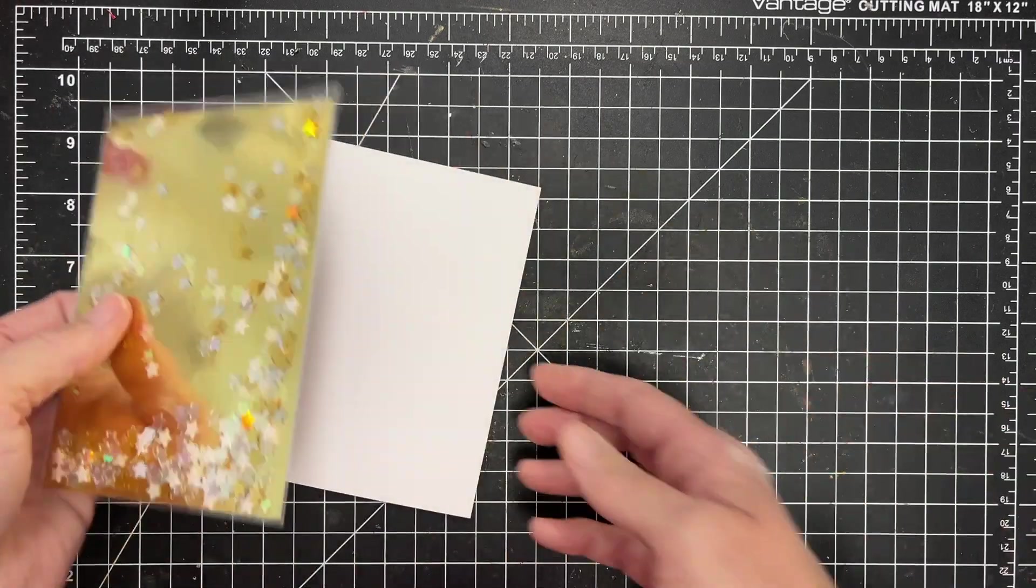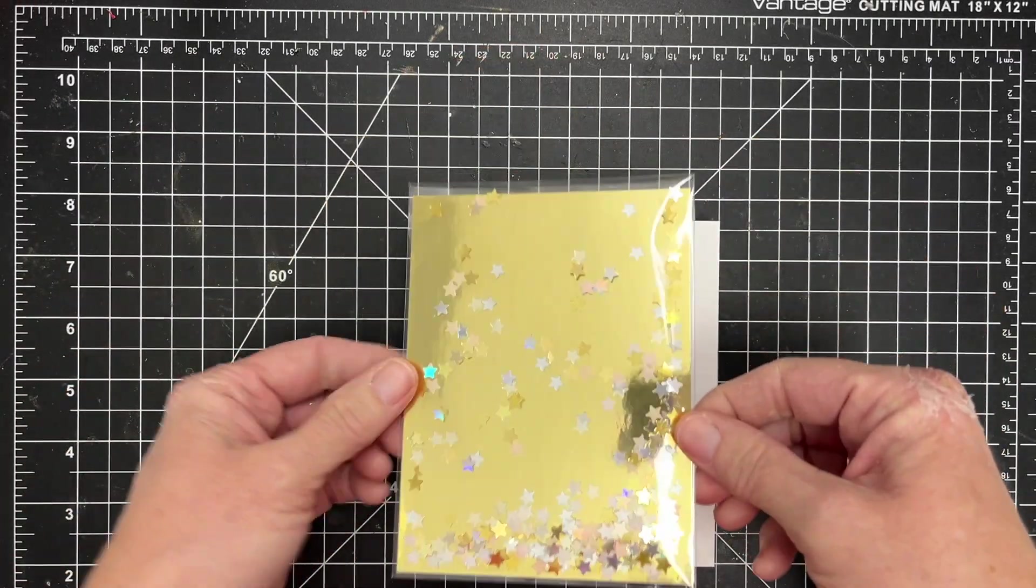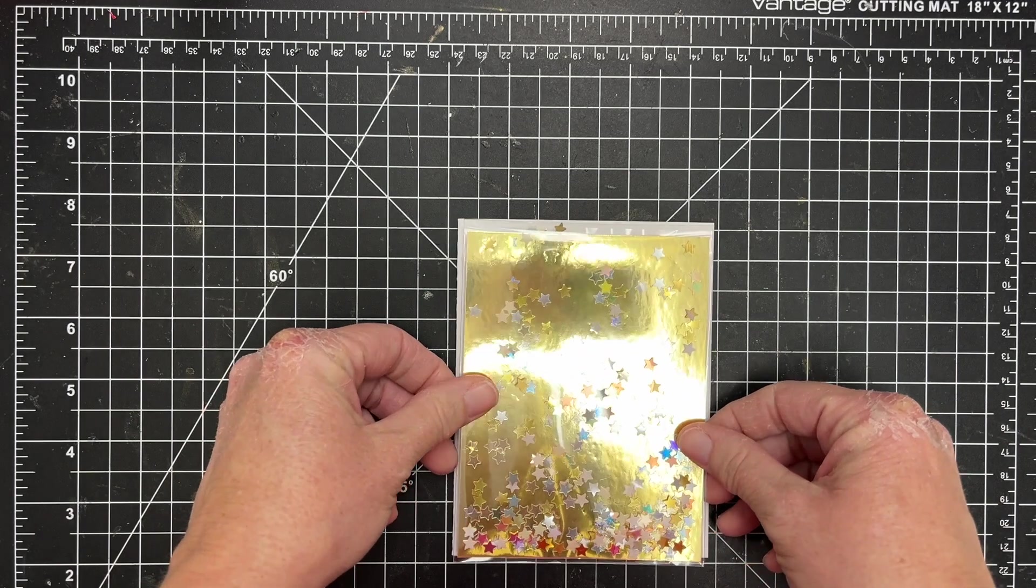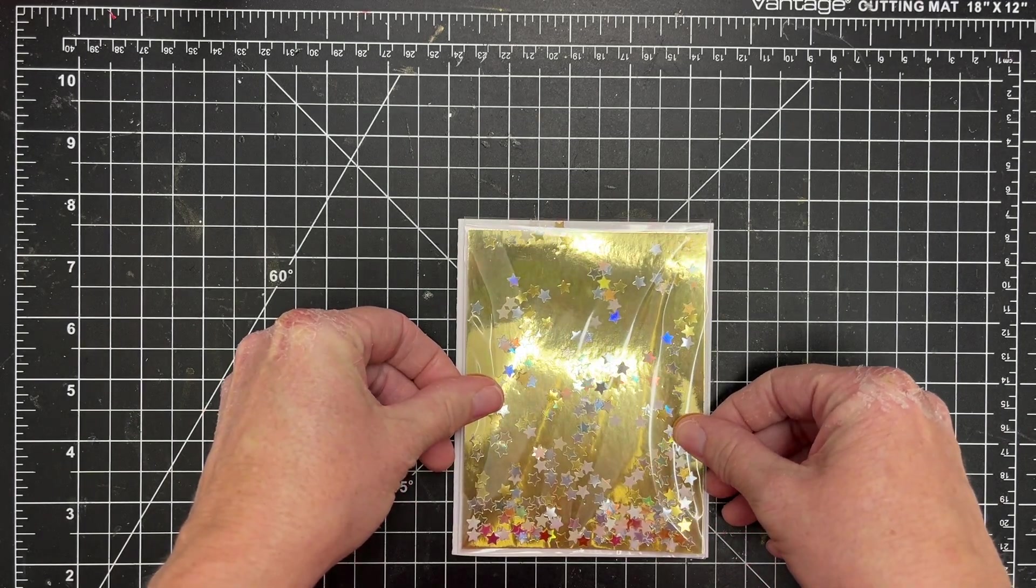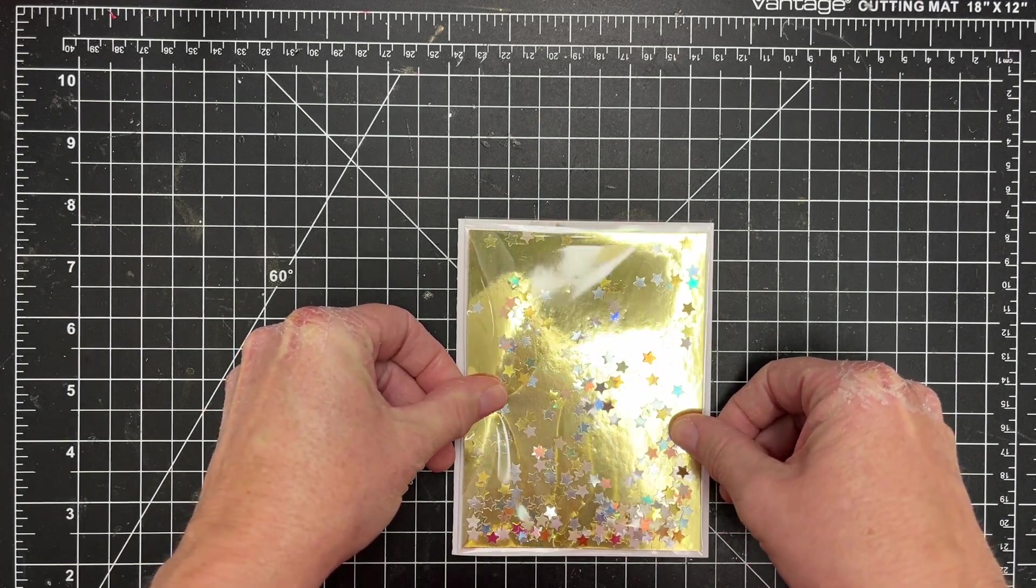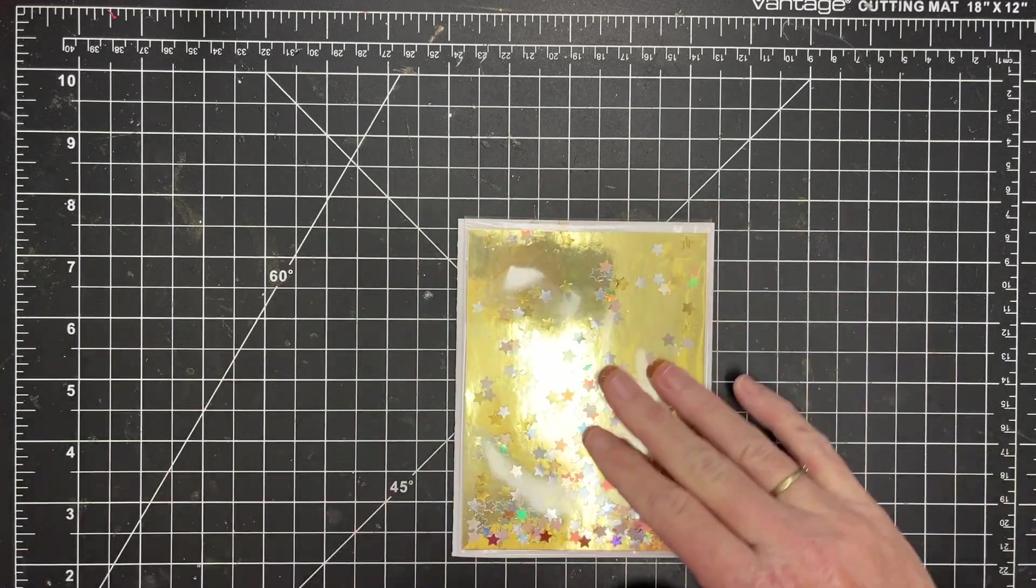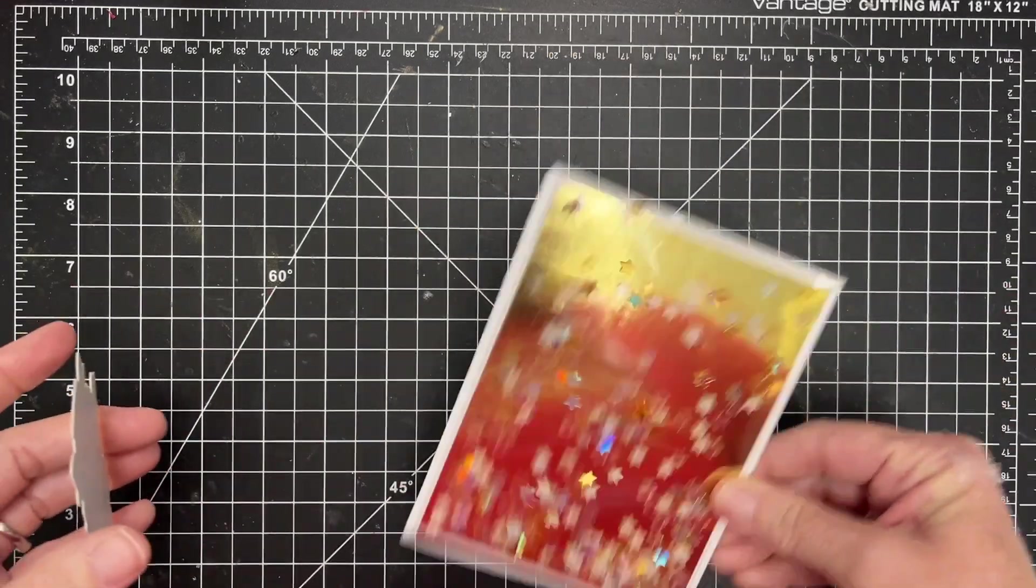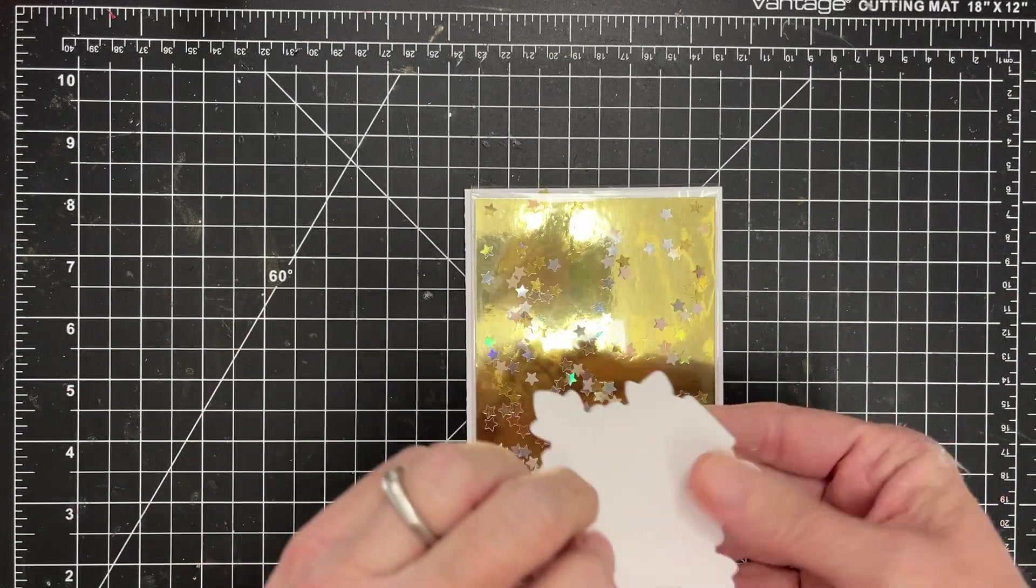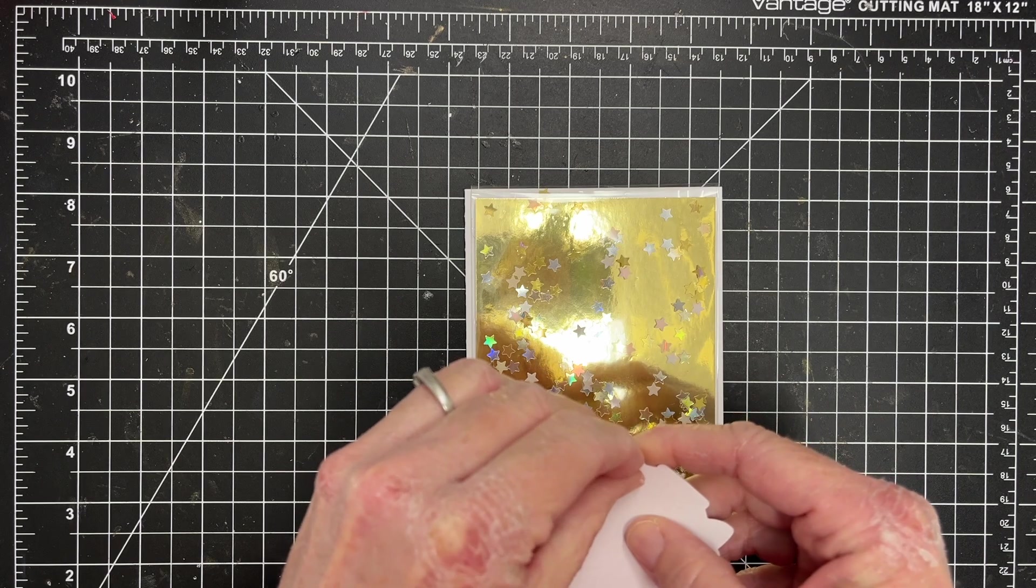And then to finish it, I've got a little sticker that is from my craft stash. It's a cardstock sticker from Recollections at Michaels. I think I got it this season. So it may still be available. If it's still on the website, I'll link it, but it's this beautiful Merry Christmas sticker.